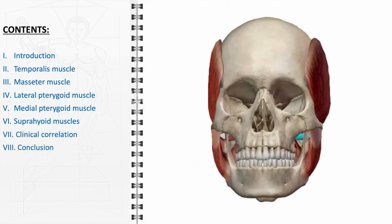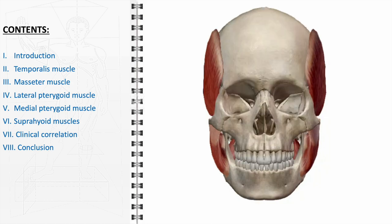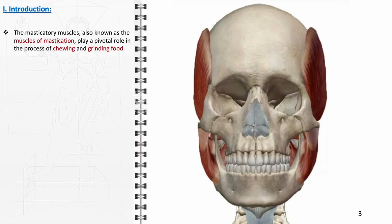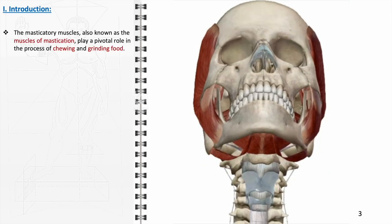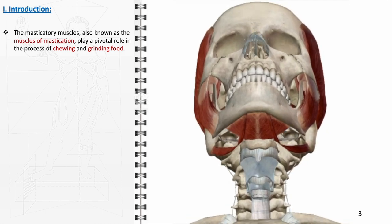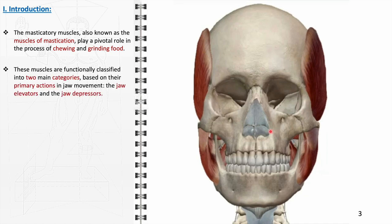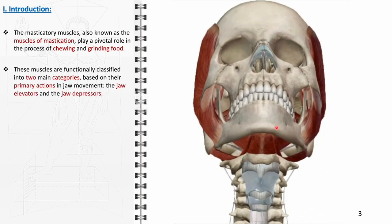We will also explore clinical correlations, highlighting how these muscles relate to various medical conditions. Masticatory muscles, also known as the muscles of mastication, are instrumental in the mechanical process of chewing and grinding food, preparing it for digestion. These muscles are functionally classified into two main categories based on their primary actions in jaw movement: the jaw elevators and the jaw depressors.